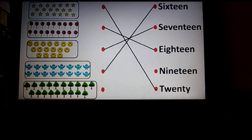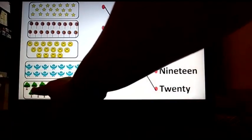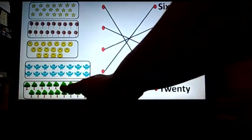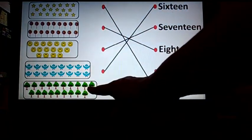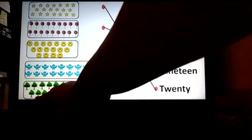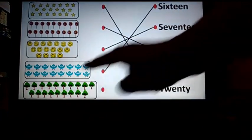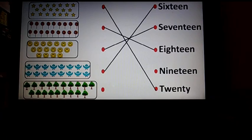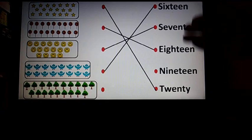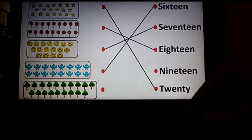Now we will count the number of trees. 1, 2, 3, 4, 5, 6, 7, 8, 9, 10, 11, 12, 13, 14, 15, 16, 17, 18, 19. Where is number 19 written? What is the number name of 19? N-I-N-E-T-E-E-N. 19. It is here. So let's match.